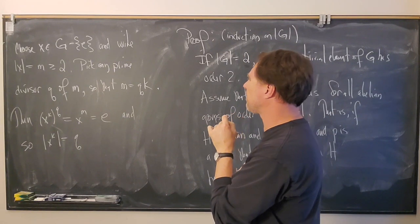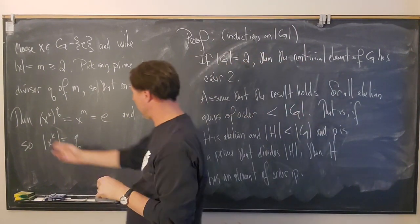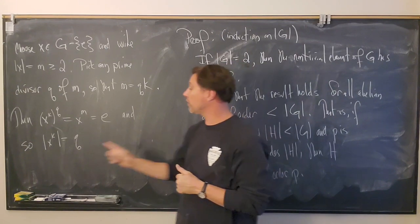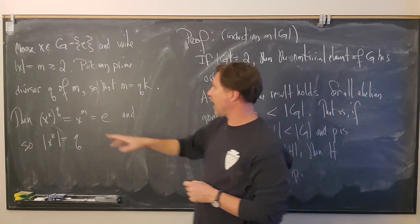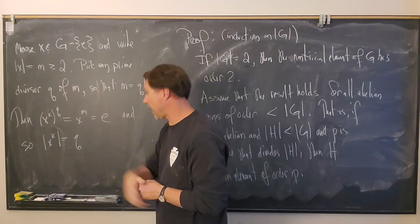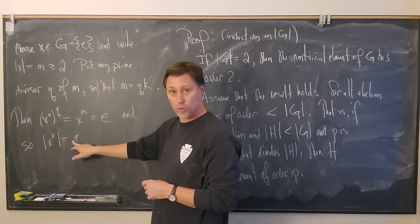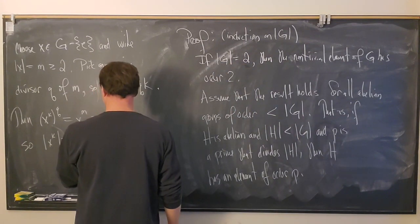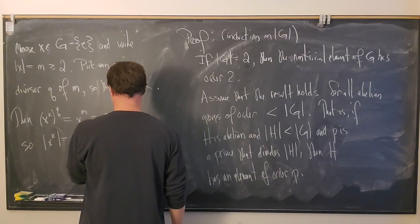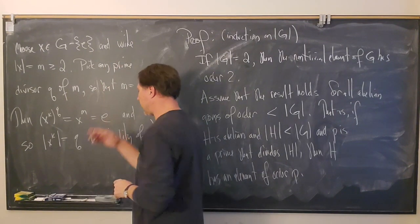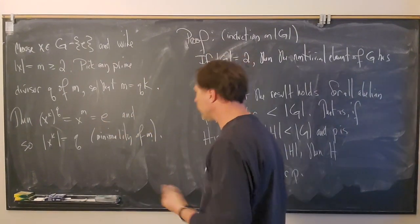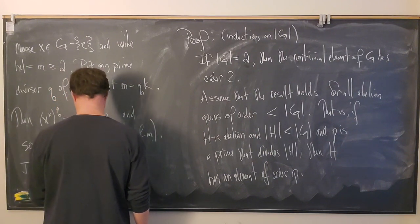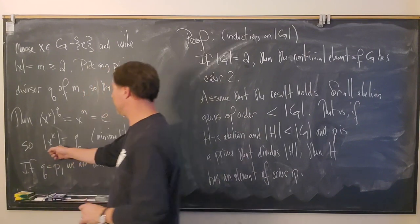We could have gotten lucky: if q equals p, we're done — we've found an element of G that has order p. But maybe we didn't get lucky. Otherwise, if q is not equal to p, we need to continue.